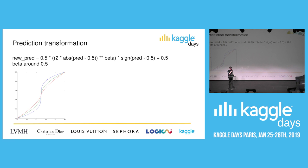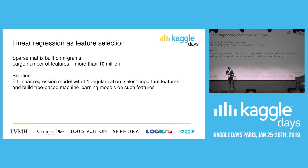Also, don't forget about prediction transformation. After building a model, you can tune it in several ways. For example, sometimes machine learning models predict everything around 0.5, so you can help it by moving such predictions closer to 0 or 1 using a specific formula.